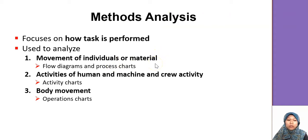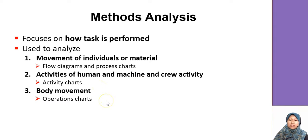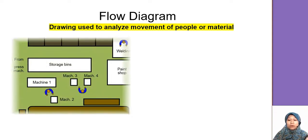We look at the movement of individuals or materials using the flow diagram and process chart. For the activity of humans, machines, or crew, we use the activity chart. For body movement, we use the operation chart. Each chart serves a different purpose.